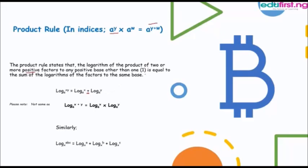Note that this applies when X and Y are not less than or equal to 1. Also note that log XY to base A is not the same as log X to base A multiplied by log Y to base A — they are completely different. The same rule applies when there are more than two factors, such as ABC, as long as all values are positive and not less than or equal to 1.